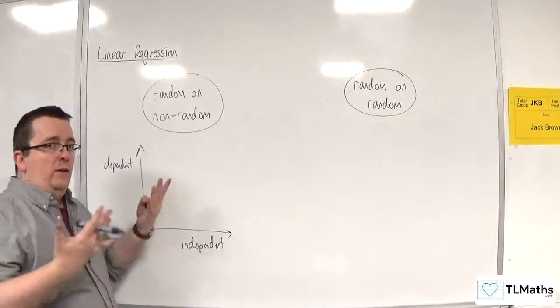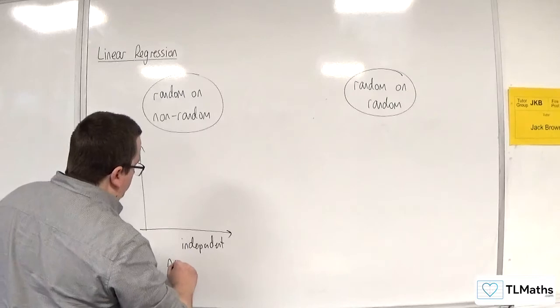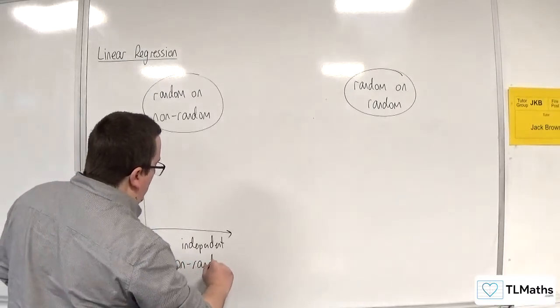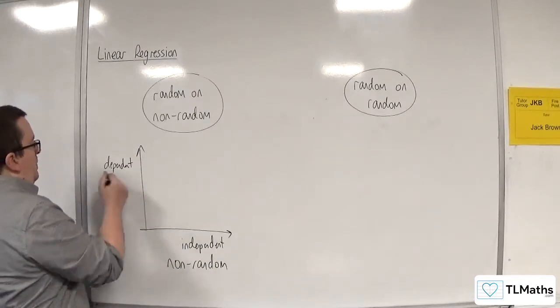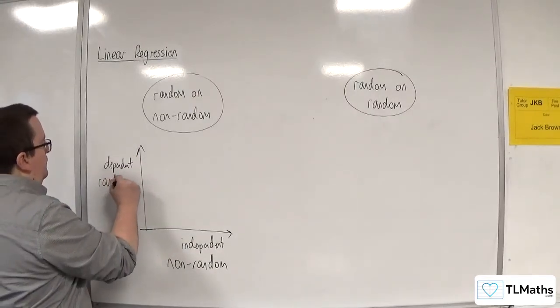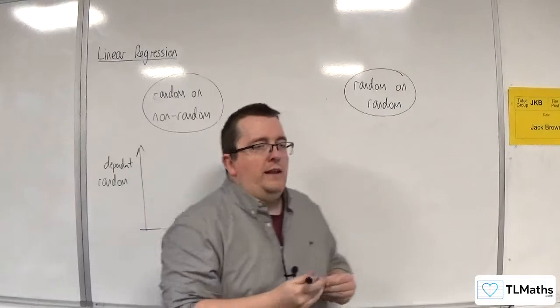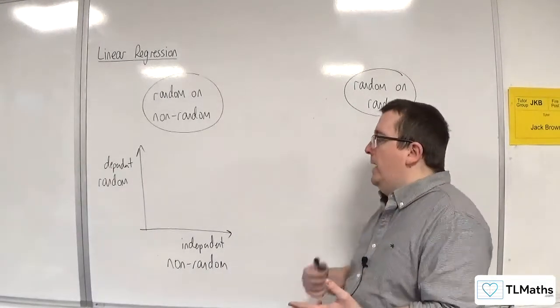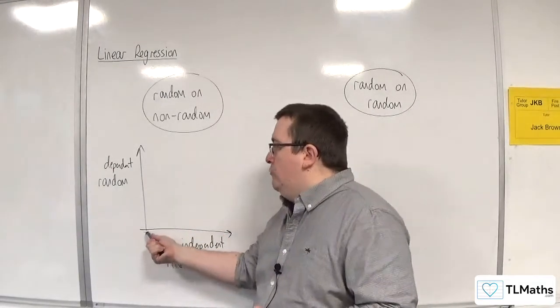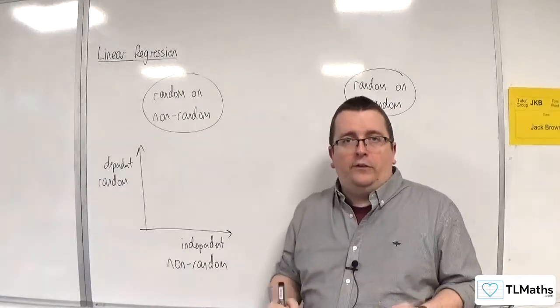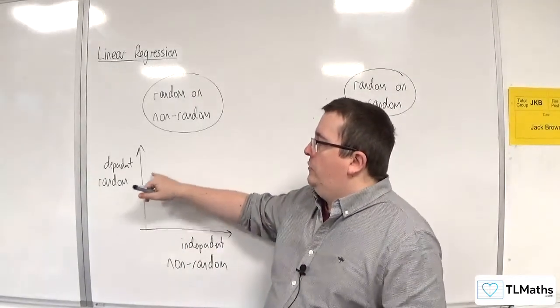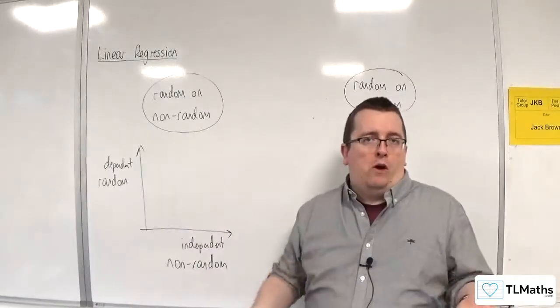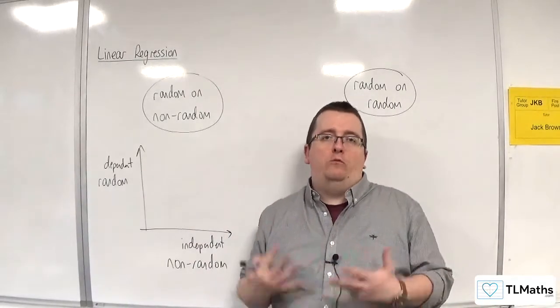So this will be your non-random variable and your vertical axis will be your random variable, because the whole point is that you are collecting your data. It might be different levels of fertilizer, for example, and then you will figure out the yield of your crop and those values that you get from that will be random.